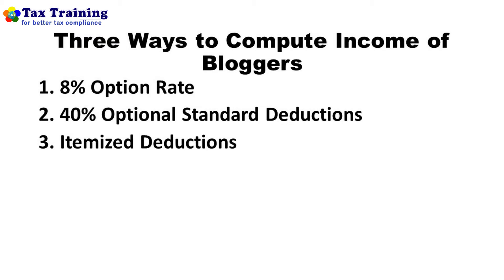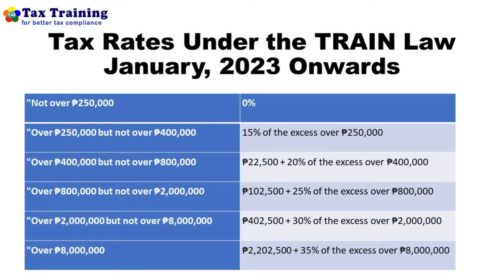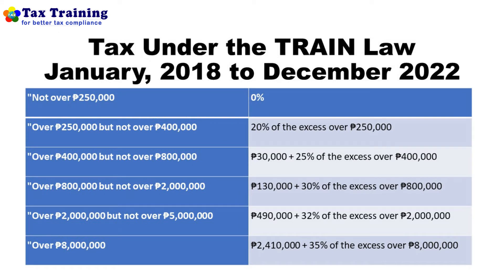There are three ways to compute the income tax of bloggers: number one is the eight percent option rate, second is the forty percent optional standard deduction, and the third is itemized deductions. The income tax rates under the TRAIN Law from January 2018 to December 2022 range from zero to thirty-five percent, and we will use these graduated rates for our illustrations.